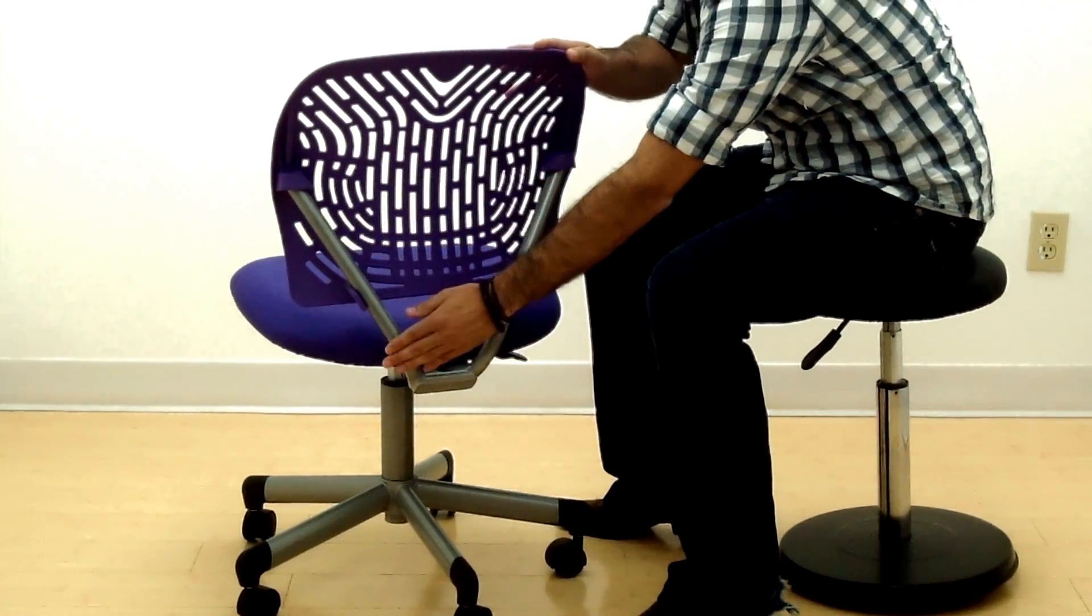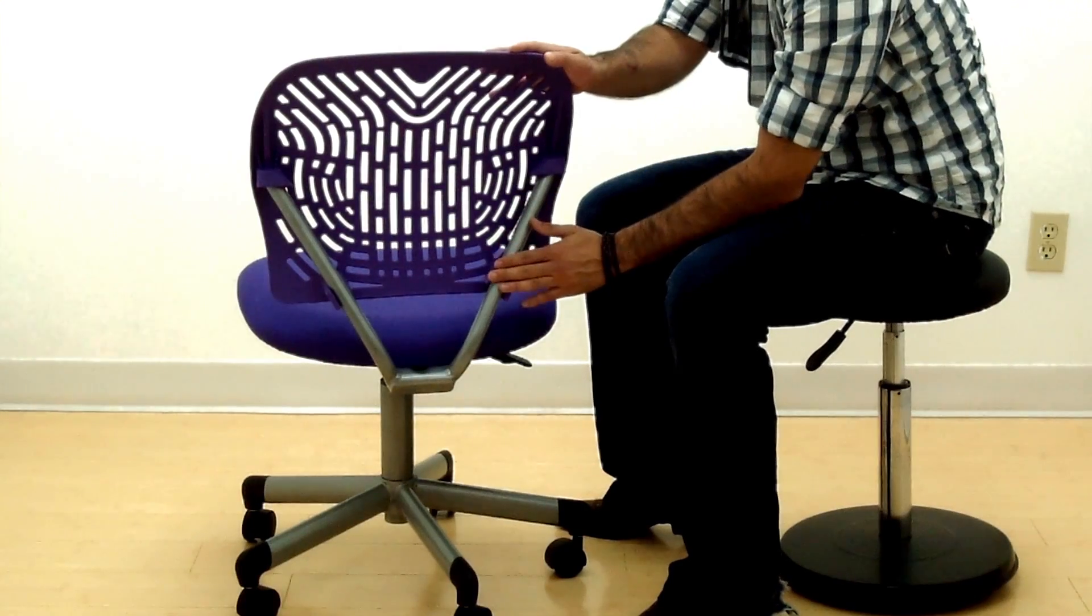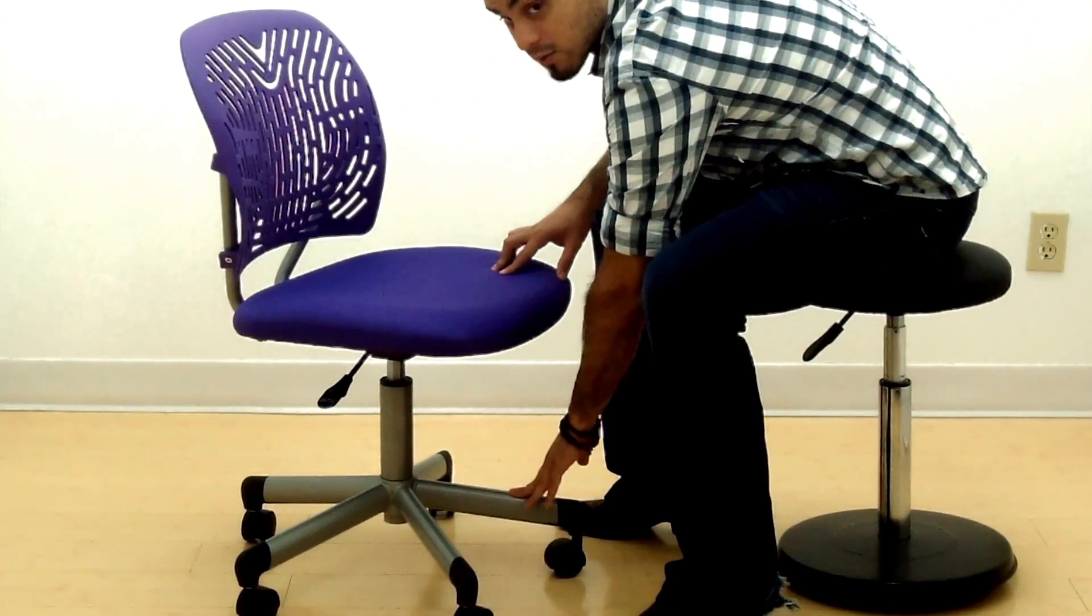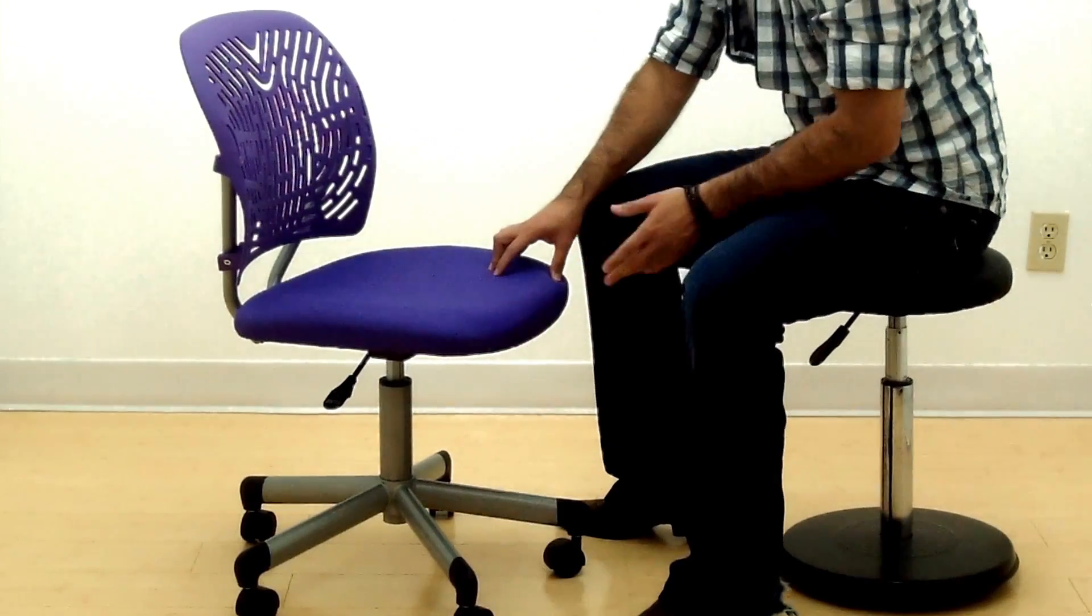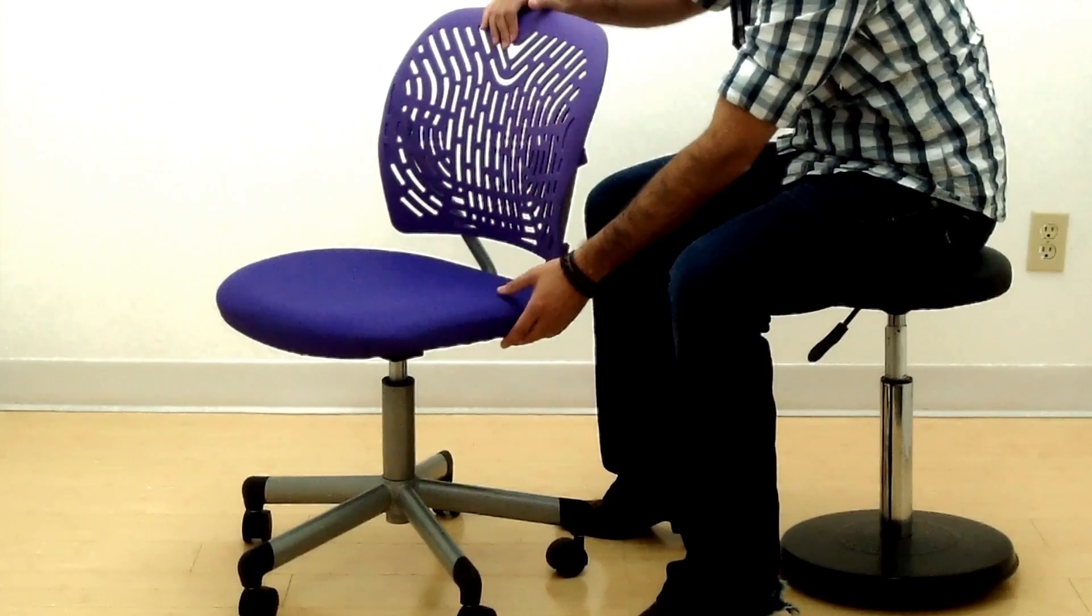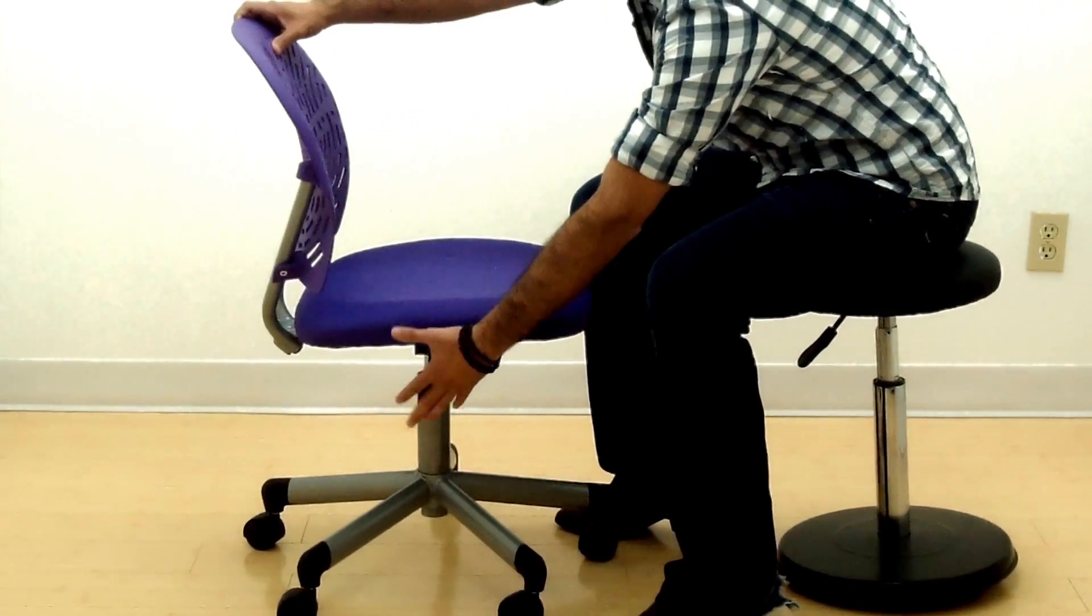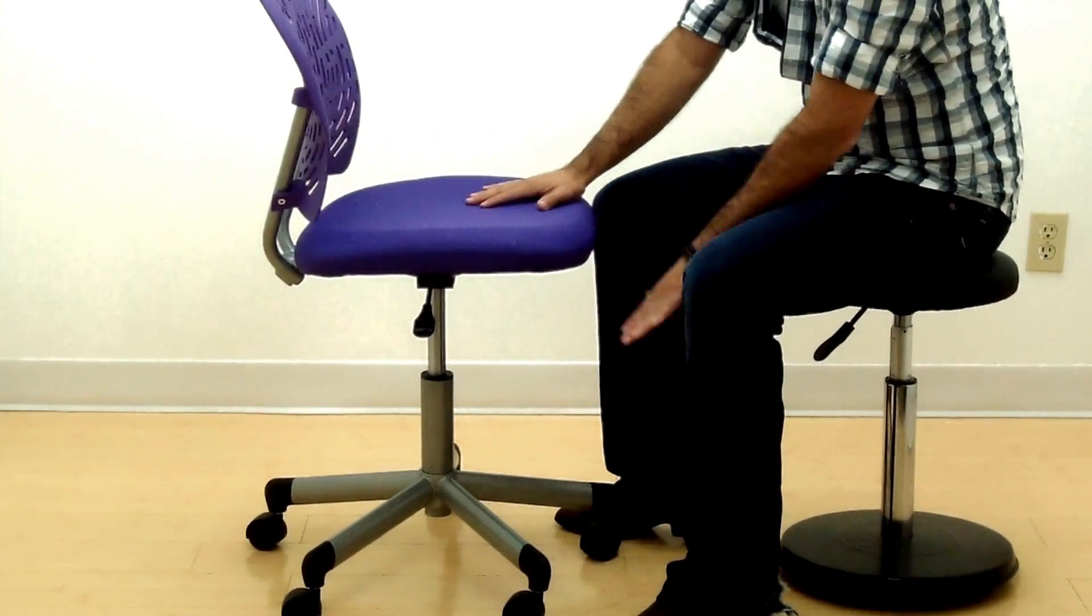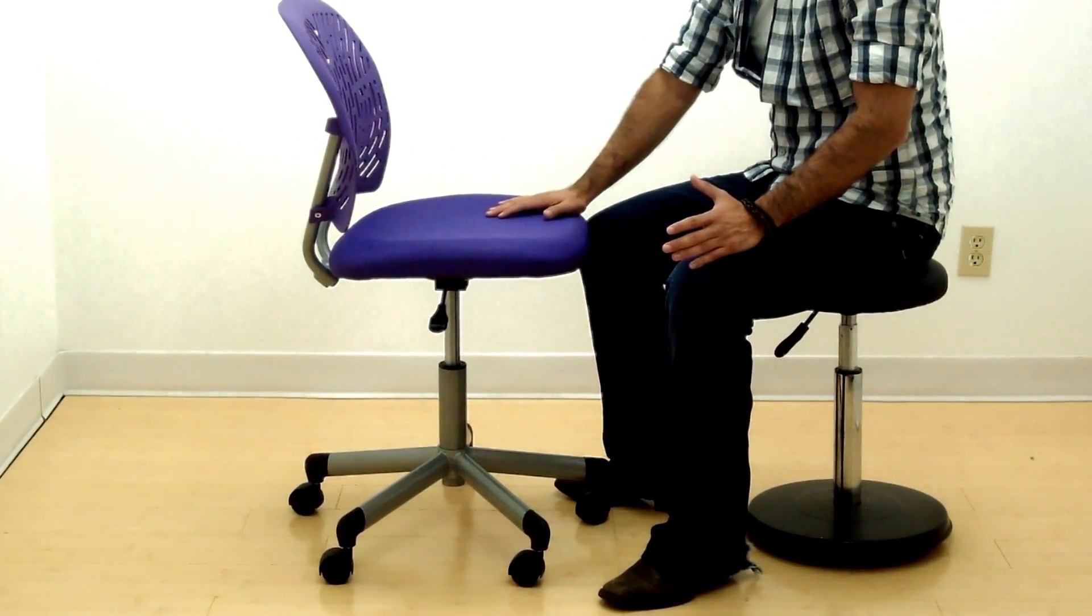It does have an aluminum frame on the backrest for good support and features the same aluminum frame on the base as well with casters for carpet. The adjustment on this chair is one basic adjustment over on this side, and it has a one height paddle control to raise and lower the chair to the height that you need for the children.